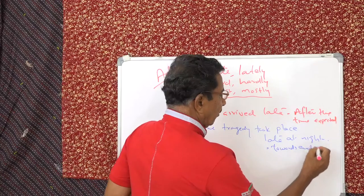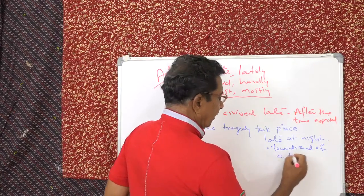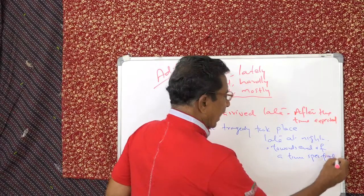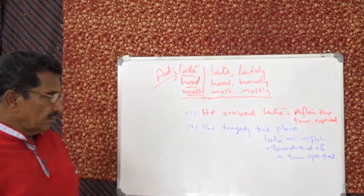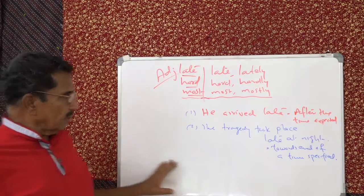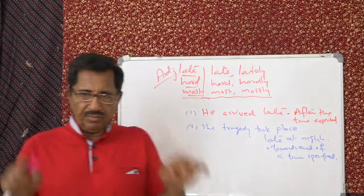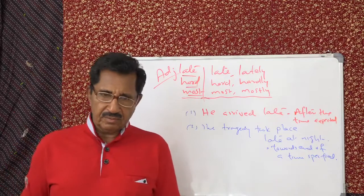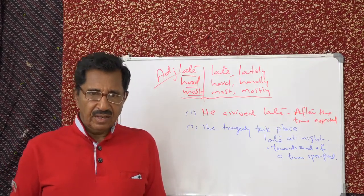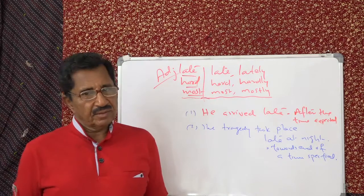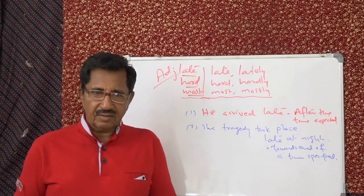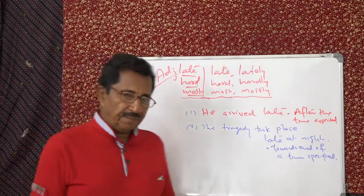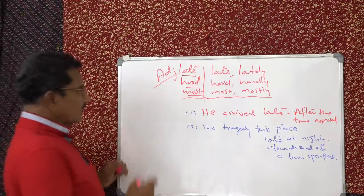Towards the end of a time specified. Night. The tragedy took place late at night. Night is the specified time. At the end of that time, the tragedy took place. Late afternoon, we say late afternoon. That means, say, 3:30. So that is specified time.